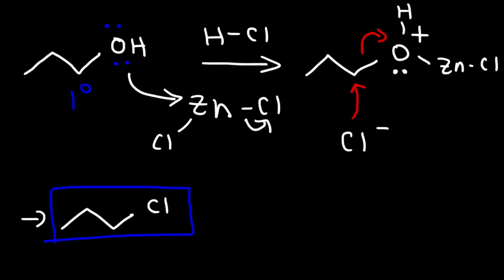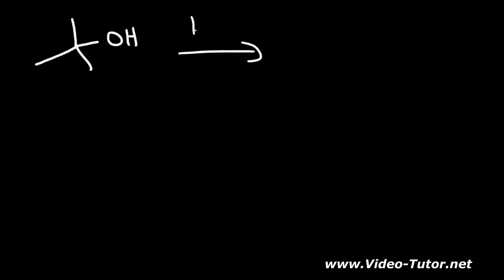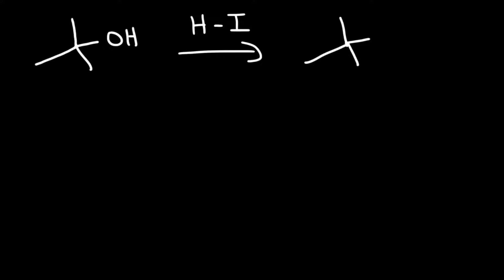If you want to convert a primary alcohol into an alkyl chloride, you should use the Lucas reagent. Now let's work on more examples. With a tertiary alcohol reacted with hydroiodic acid, the end result is replacement of the OH group with an iodine atom.